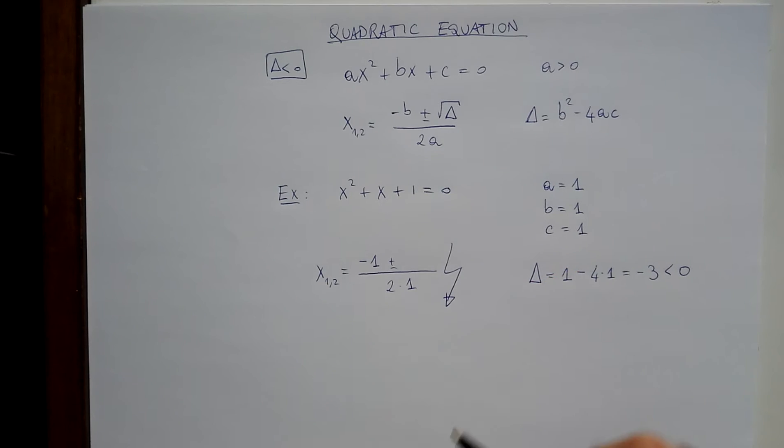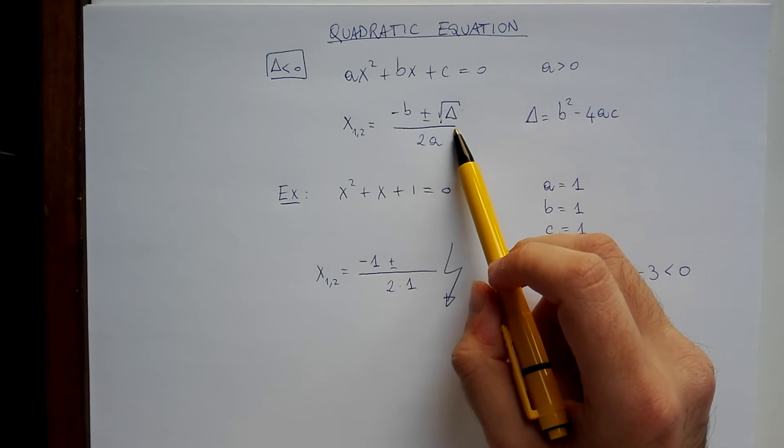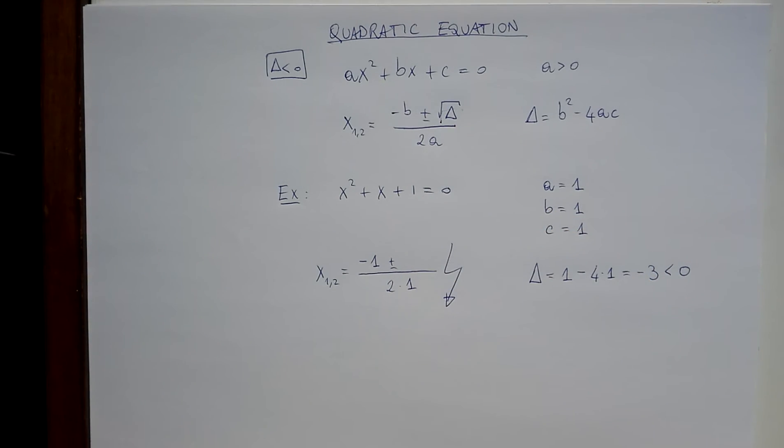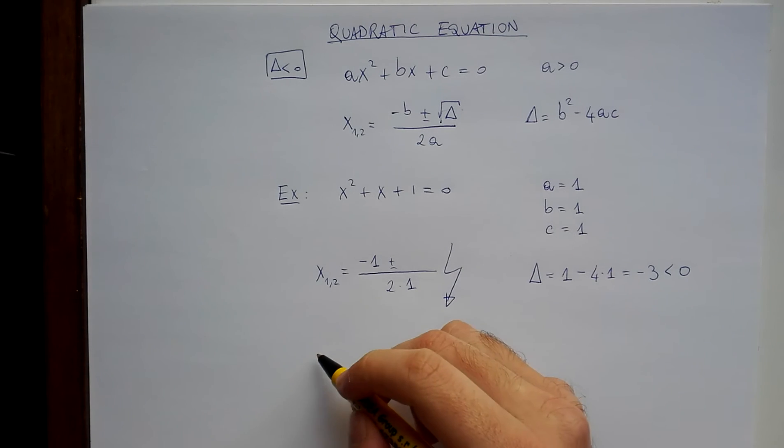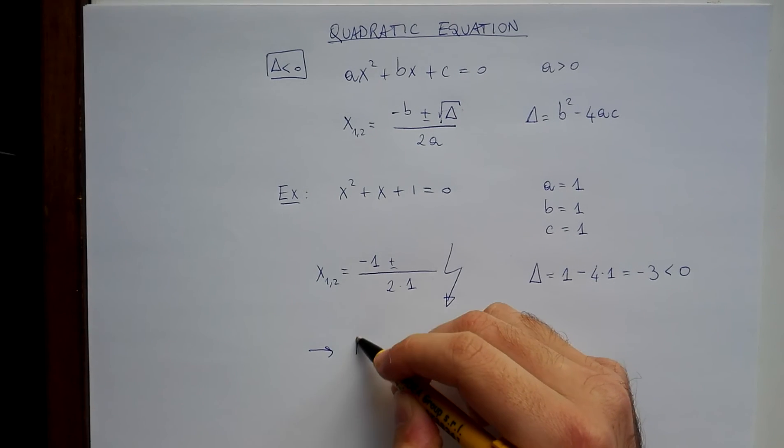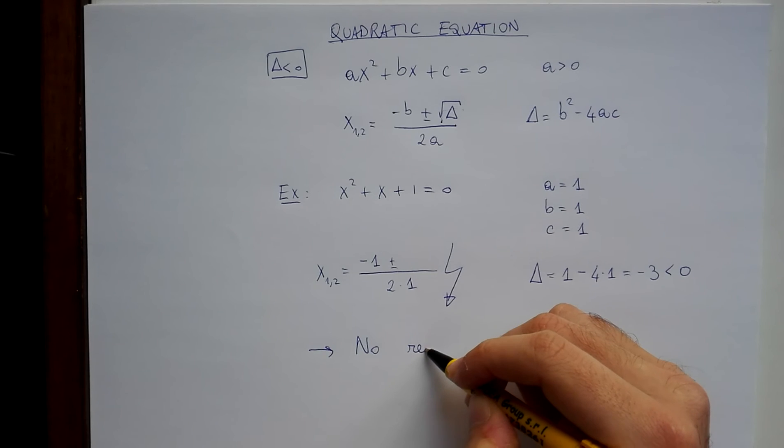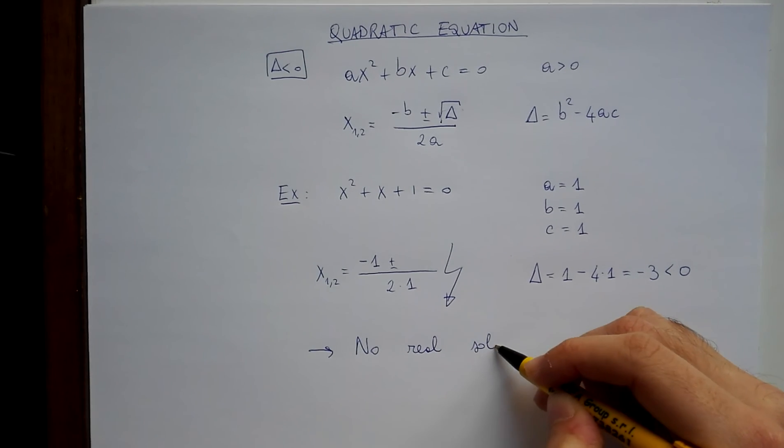So, this procedure fails. Why? It fails because we cannot compute the square root of a negative number. So, the answer to the problem is, there are no real solutions.